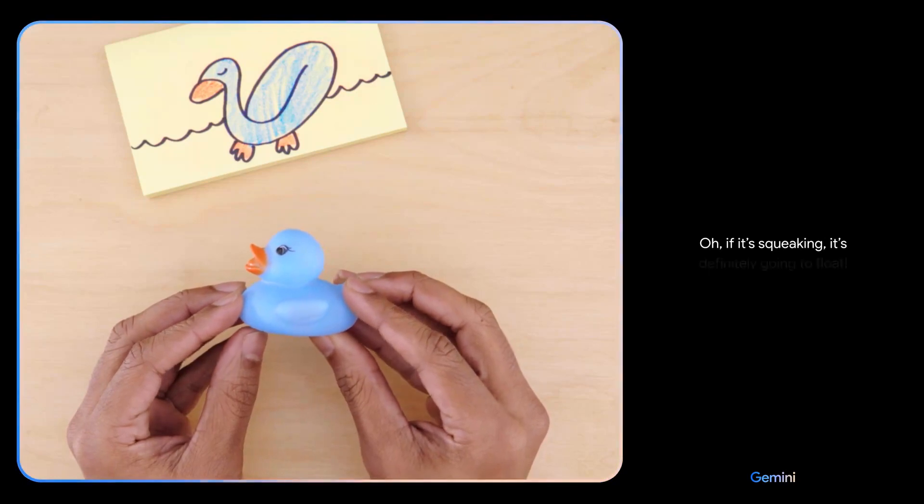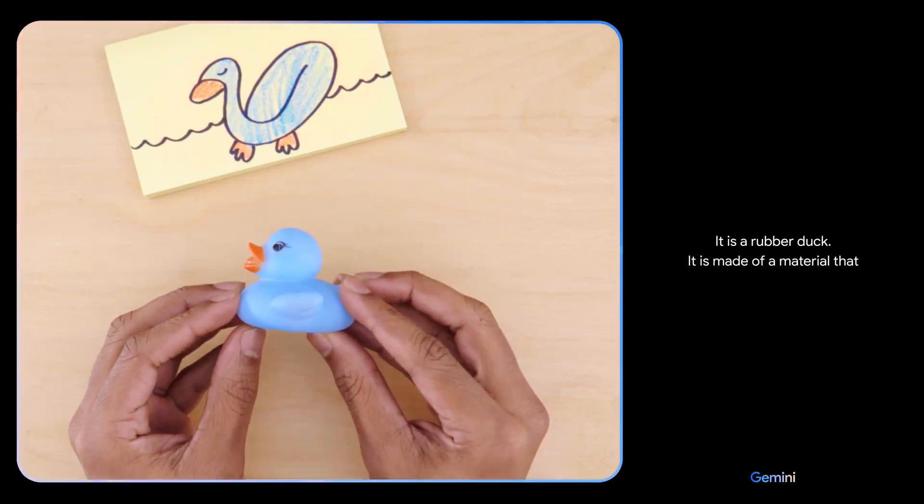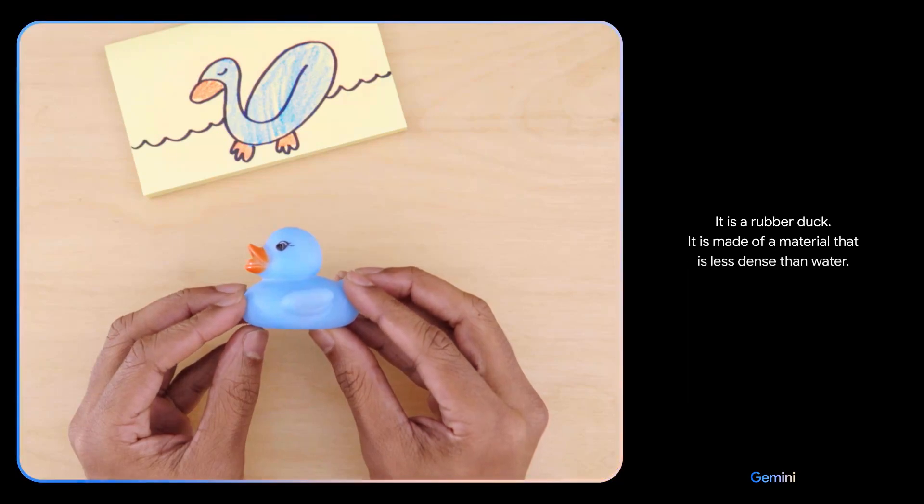What is it? If it's squeaking, it's definitely going to float. Nice. It is a rubber duck. It is made of a material that is less dense than water.